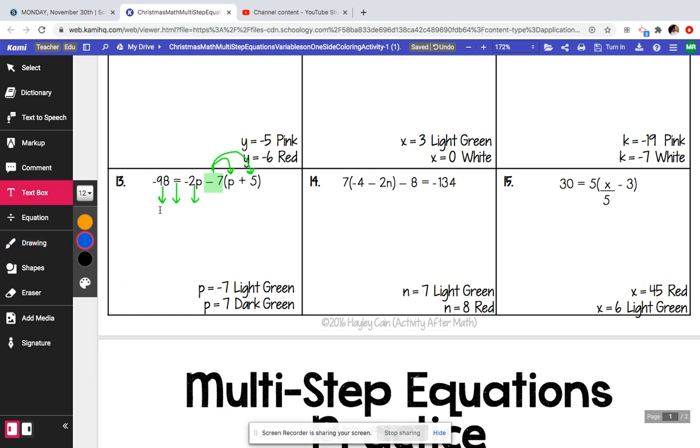So we haven't touched the negative 98, we haven't touched the equal sign, and we haven't touched this negative 2p. So we will be left with negative 98 equals negative 2p. And then we also just solved this. So negative 7 times p is going to be negative 7p. Negative 7 times 5 is going to be negative 35. And so now we're here. That's step 1.